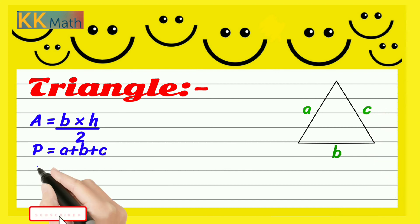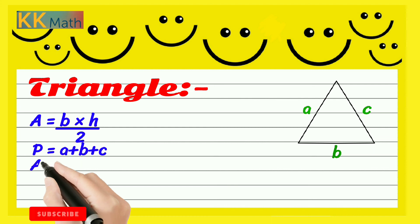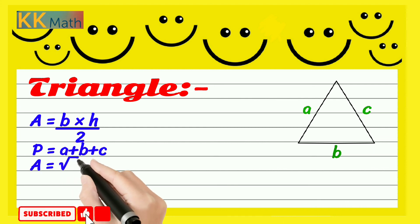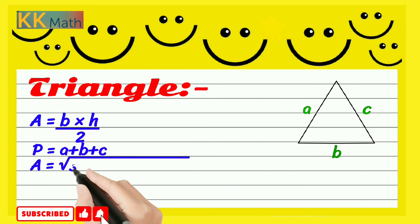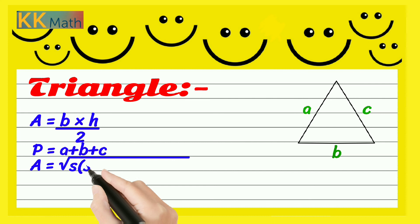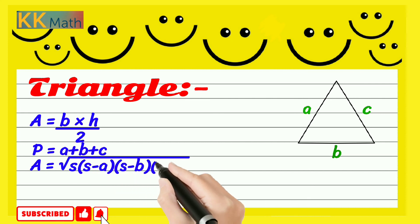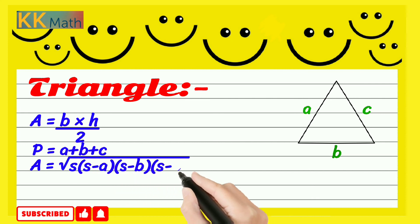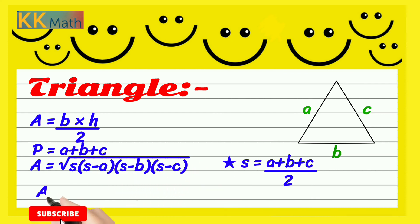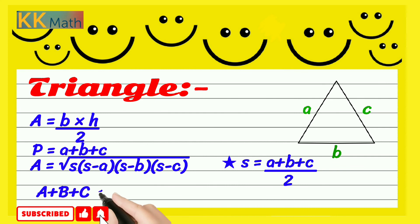If given the sides of a triangle, then we use the Heron's formula for area. And also, a plus b plus c equals 180 degrees for the angles of a triangle.